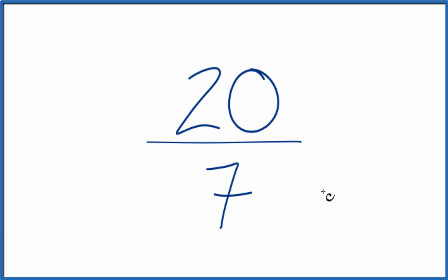So we want to find a common factor, something that goes into 20 and 7 evenly. But the only number that goes into both 20 and 7 evenly is 1. That means this is already in lowest terms.